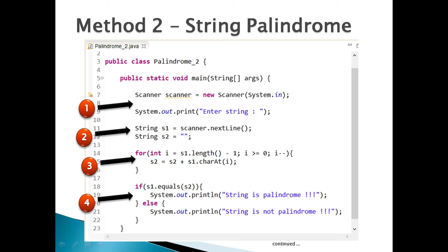Step 3: apply a for loop that traverses s1 in the opposite direction, one character at a time. The String class has a length() method that returns the character count; length minus one gives the pointer to the last character of the string.